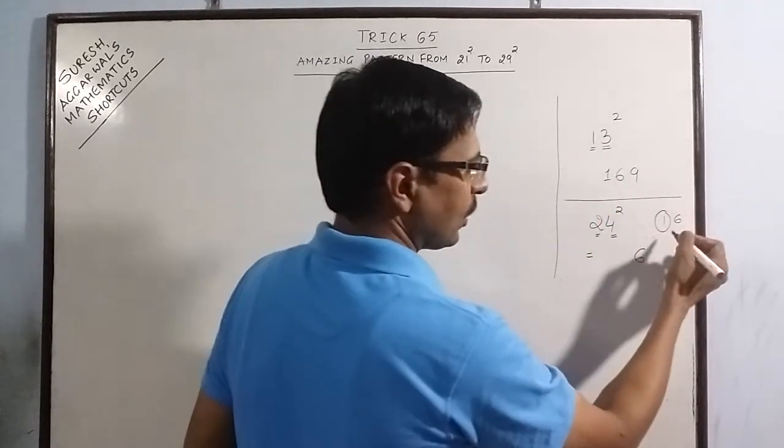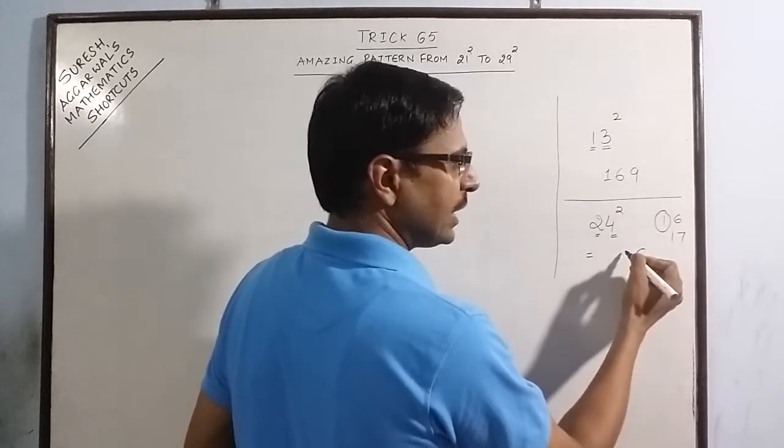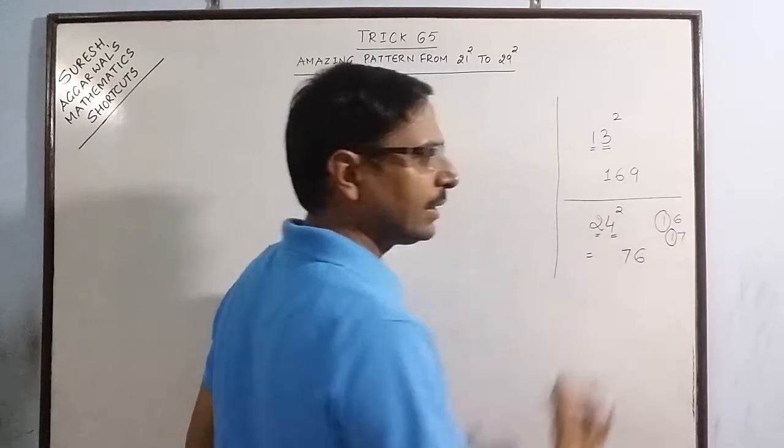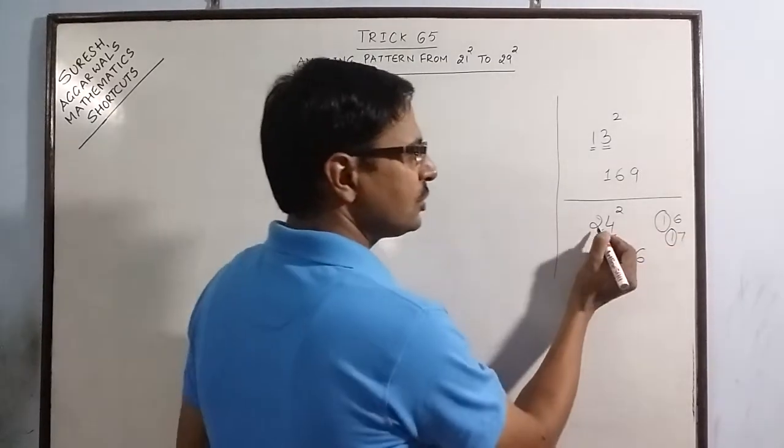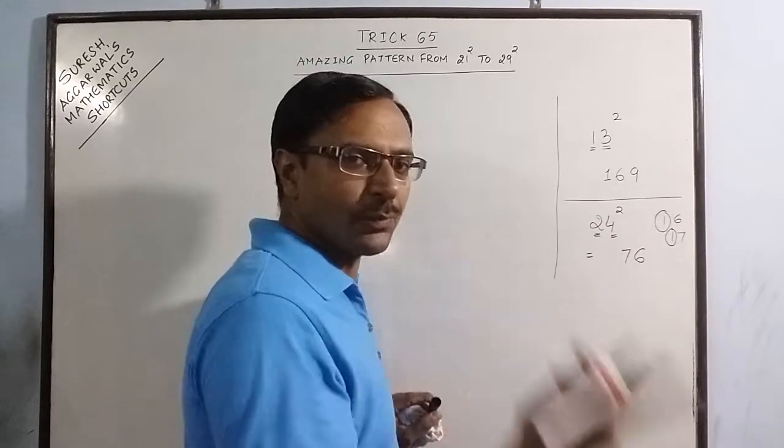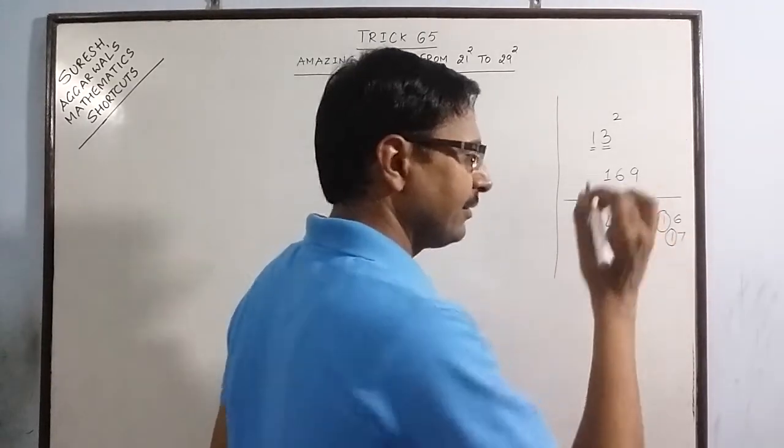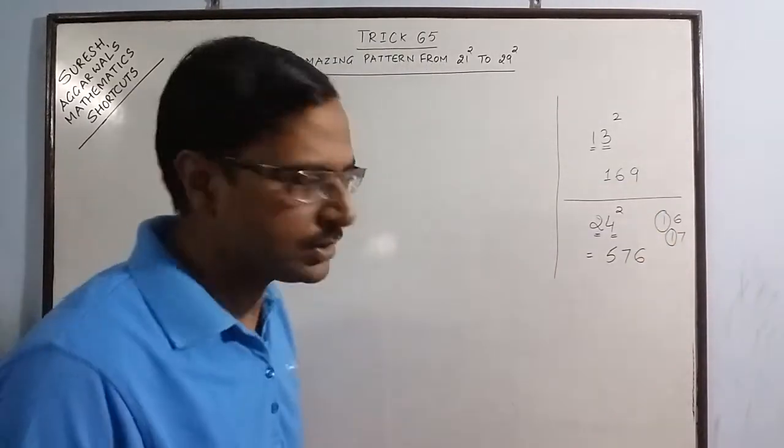So now we have 17. So retain 7. Again carry 1. Finally 2. 2 square is 4. 4 plus 1 is 5. So 576 is the square of 24.